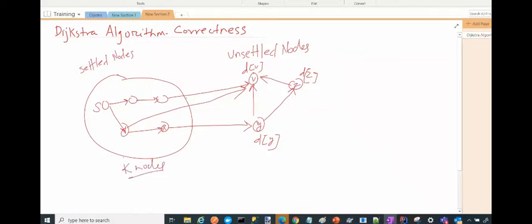These are all the relaxed nodes which are updated when we were selecting all these nodes with their minimum distance. So these are all the relaxed nodes which have their distances updated, but they are still not part of the settled node set.